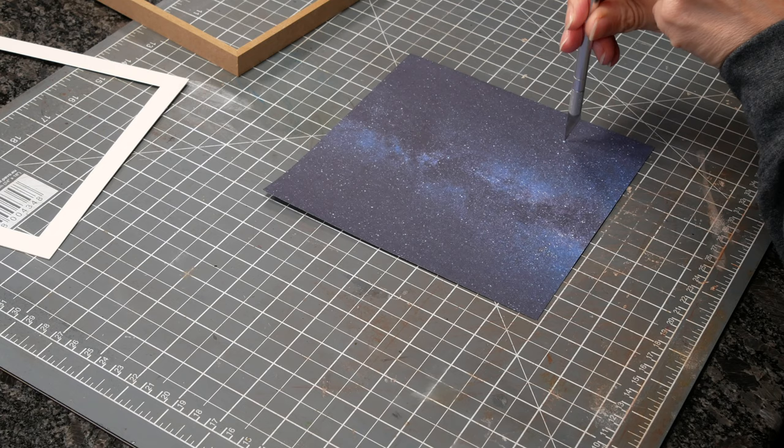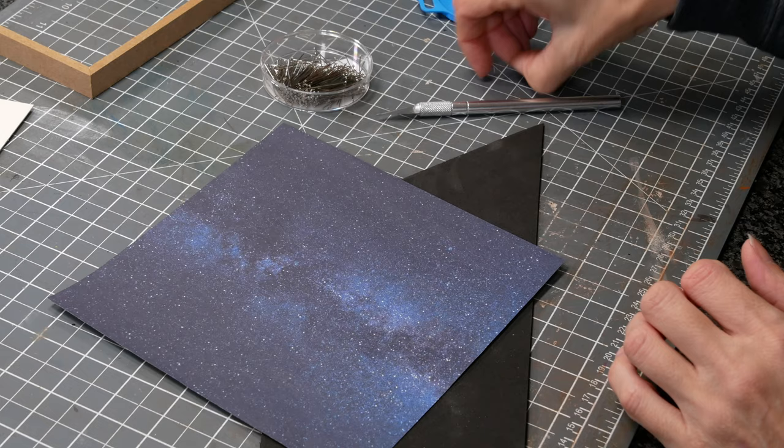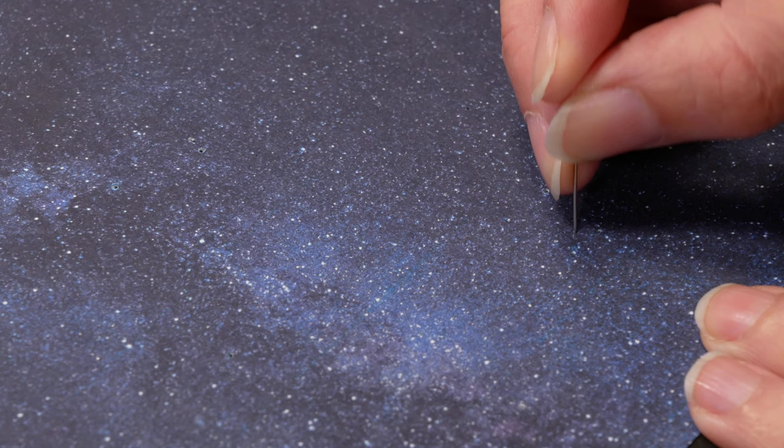I tried using the tip of an exacto blade on the bigger ones. It wasn't actually ideal, so I moved on to plan B—a pin with some craft foam underneath. This worked amazingly well, and I just spent the next hour or two happily making holes in a bit of paper.